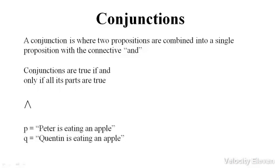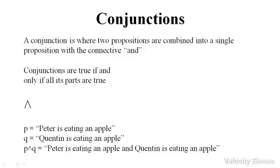Taking these two propositions, Peter is eating an apple and Quentin is eating an apple, we can combine them to make proposition P and Q, which is Peter is eating an apple and Quentin is eating an apple.